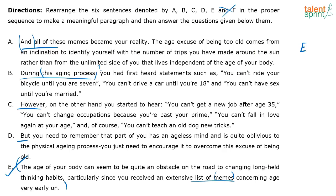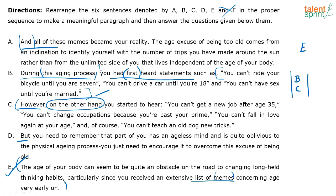'First heard' — 'first' is your sequence clue word, so B has to come before C. Then 'however' or 'on the other hand' — that's also another clue showing a contrast. So there is one list of memes, then another list of memes. C has to follow B.